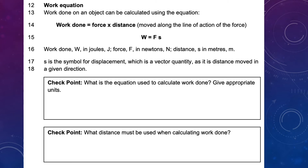Now we get to the actual equation. Highlight the main part: work done equals force times distance — or displacement, because it says moved along the line of action of the force. So whatever direction the force moves in, that's the direction of your distance, making it displacement: W equals F times s.